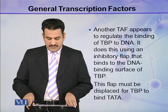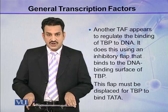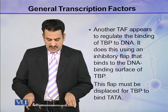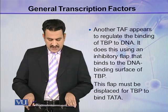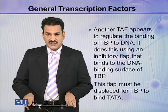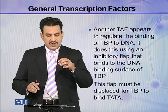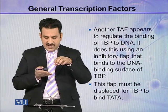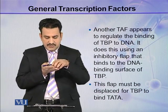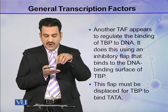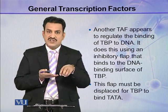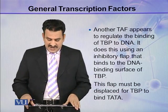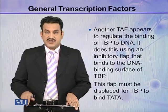Another TAF appears to regulate the binding of TBP to DNA. It does this using an inhibitory flap that binds to the DNA binding surface of TBP. On TBP there is a DNA binding surface, and an inhibitory flap is present on this surface. For TBP to bind to DNA, this flap must be removed and displaced for TBP to bind the TATA element.